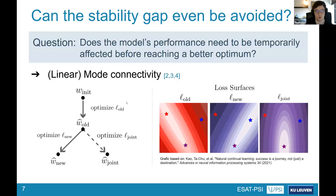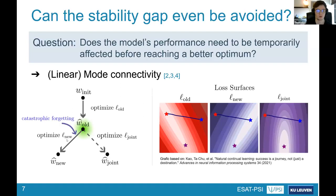Based on two schematics — the left showing the training flow and the right depicting loss surfaces for the old task, the new task, and the joint model — this is based on work from Kawa. When we train the first task, we reach a parameter configuration near optimal for it. Training only on the new task leads to catastrophic forgetting: we move out of the vicinity optimal for the old task and into a vicinity optimal for the new task, but this is not necessarily a joint optimum.